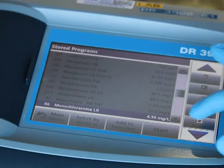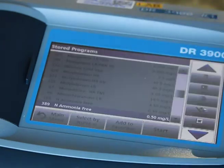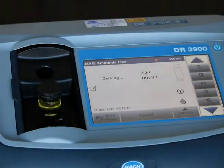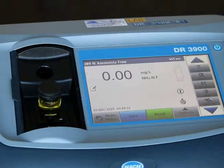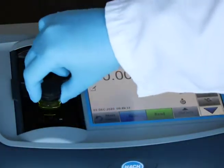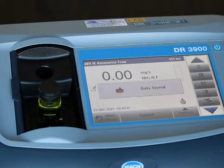Change your program on the instrument to the appropriate one for measuring free ammonia. Zero the instrument using the monochloramine cell. Remove the monochloramine cell. Clean the free ammonia cell and place it in the instrument. Ensure there are no air bubbles in the solution. Read and record the results.